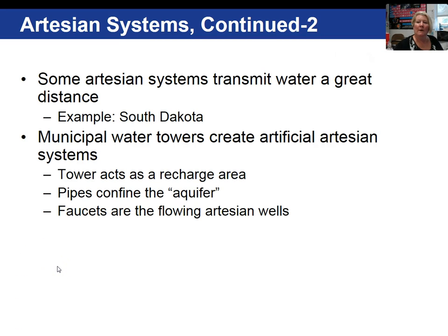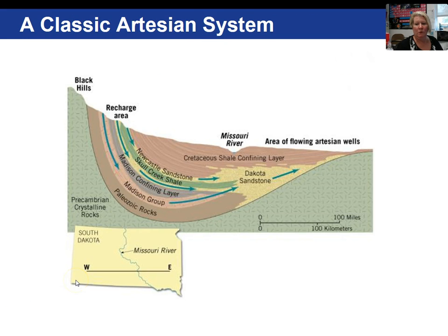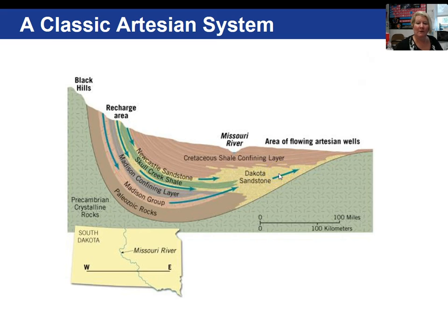Some artesian systems transmit water great distances. An example is in South Dakota, going from west to east and crossing the Missouri River. The recharge area, confining layers, and aquifer — the Dakota sandstone, the Newcastle sandstone, and the Madison Group — meet all the criteria for an artesian system: a confined aquifer that's inclined at one end to get recharged.